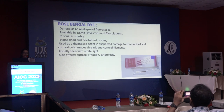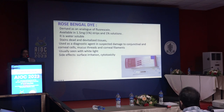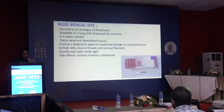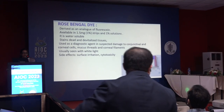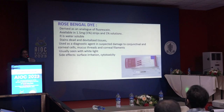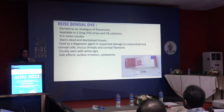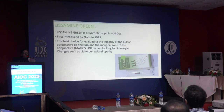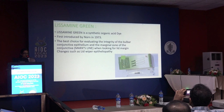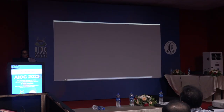Rose bengal dye is a derivative of fluorescein, also available as strips containing 1.5 mg per strip. It is water soluble and stains dead and devitalized tissue — so whenever we suspect damage to conjunctival or corneal cells we use this dye. It also stains mucus threads and corneal filaments, and only white light is needed to examine it — no cobalt blue filter. Because of significant side effects, many ocular surface surgeons now prefer lisamine green dye over rose bengal.